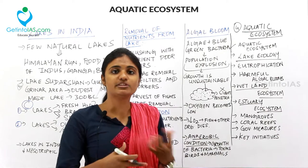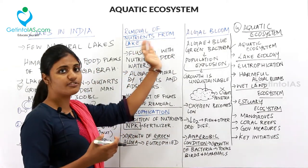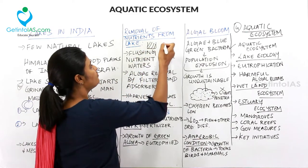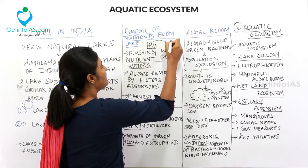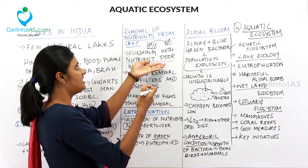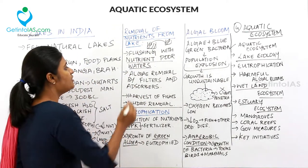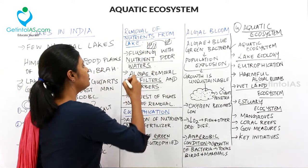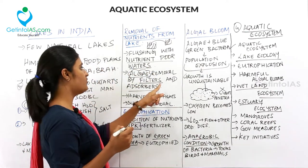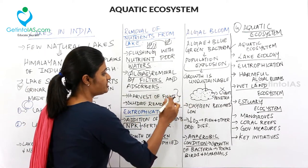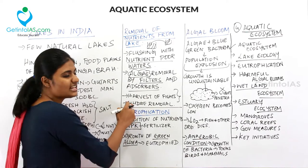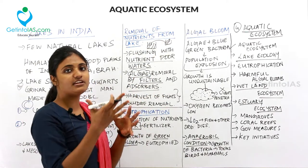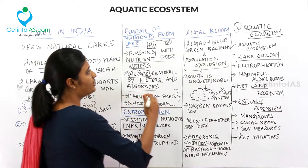To remove excess nutrients from a lake, you should flush it with nutrient-poor clean water, remove algae using filters and absorbers, harvest fish from the water so algae growth is controlled, and remove sludge and waste particles from the water. These are the processes for nutrient removal from lakes.